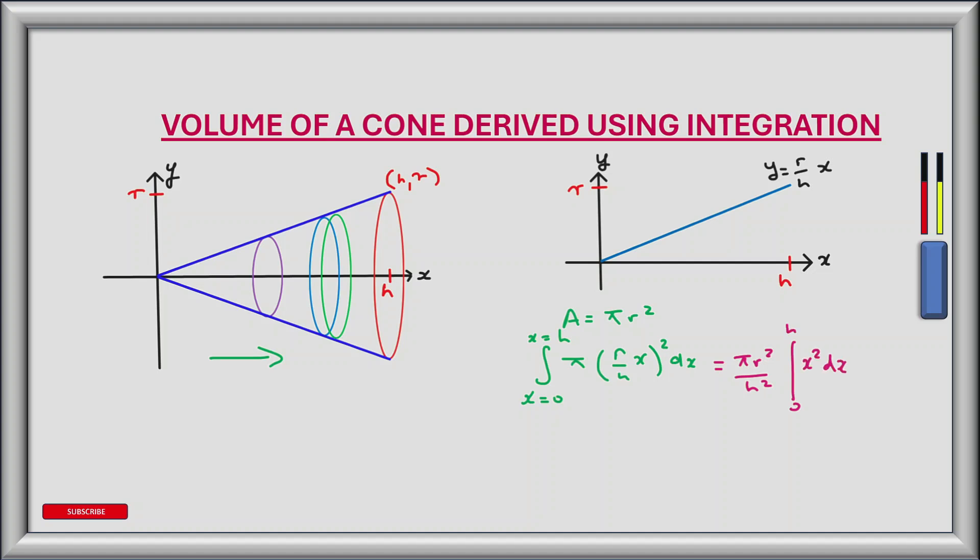If we now integrate this using the power rule we get the volume of our cone is equal to pi r squared over h squared multiplied into x cubed over 3 from 0 to h. That equals pi r squared over h squared multiplied by h cubed minus 0. And that is pi r squared h over 3. So that proves that the volume of our cone is pi r squared h over 3.